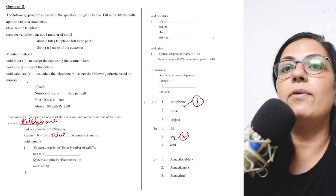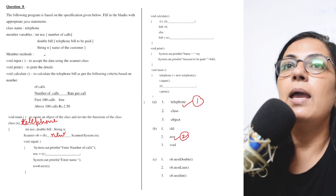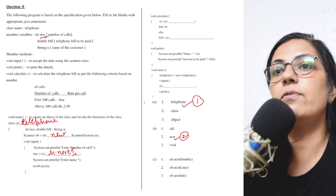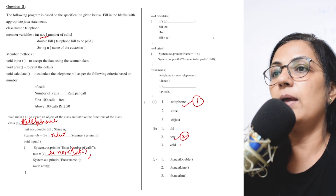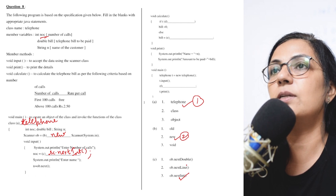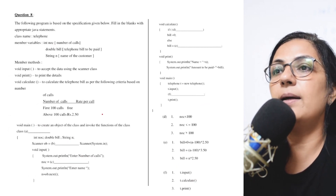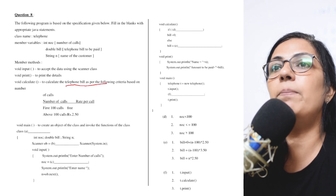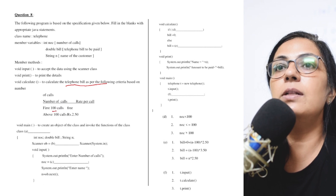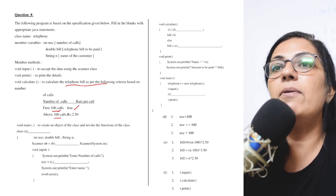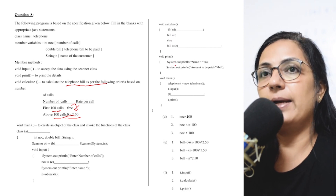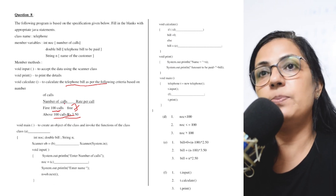To enter the number of calls, the variable 'noc' is already used in the program. Since noc is int type, we use 'sc.nextInt()' — this is the function used to input integer type values. Now the calculate function is supposed to calculate the telephone bill as per the following criteria: up to 100 calls are free, and above 100 calls it is rupees 2.50 per call.